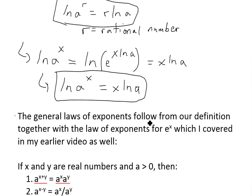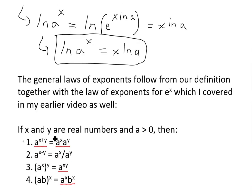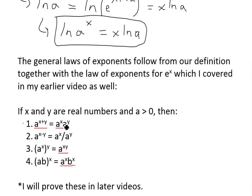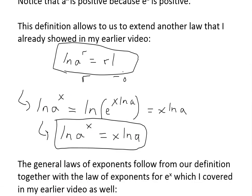With this definition, the general laws of exponents follow from our definition together with the laws for e to the x. For x and y real numbers and a greater than zero: a^(x+y) = a^x · a^y; a^(x−y) = a^x / a^y; (a^x)^y = a^(xy); and (ab)^x = a^x · b^x. I will prove these in later videos.